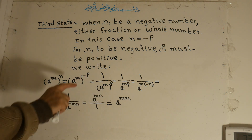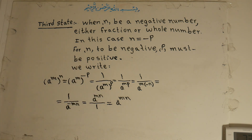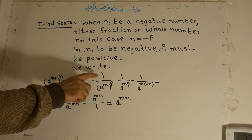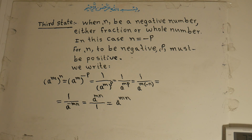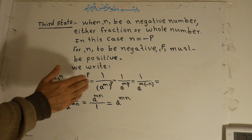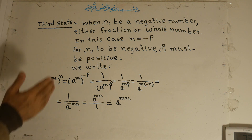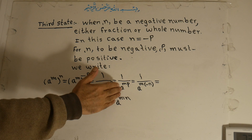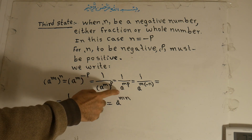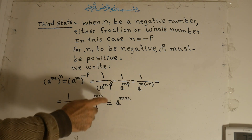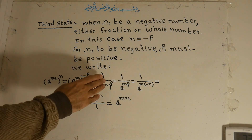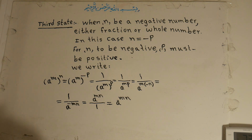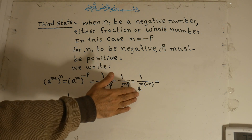To make the negative power positive, we bring the expression to the denominator. We know that a to the power of m, all to the power of p, equals a to the power of mp. So this equals 1 over a to the power of mp.